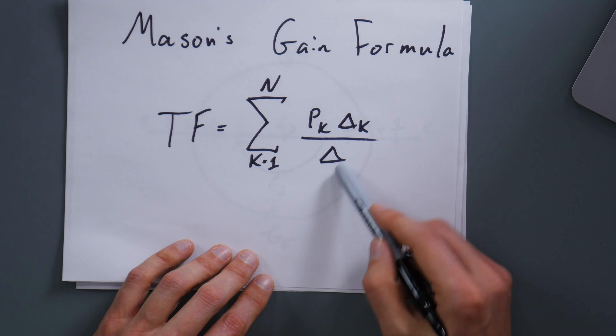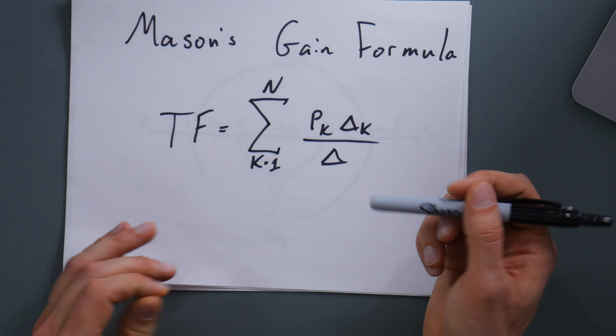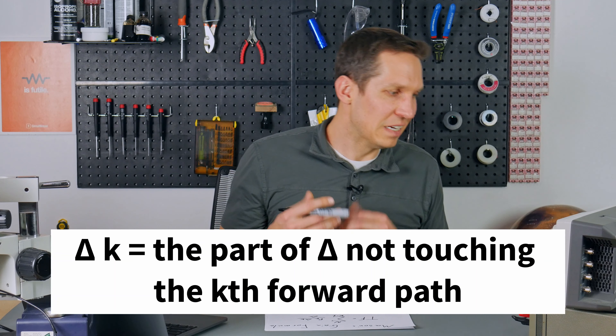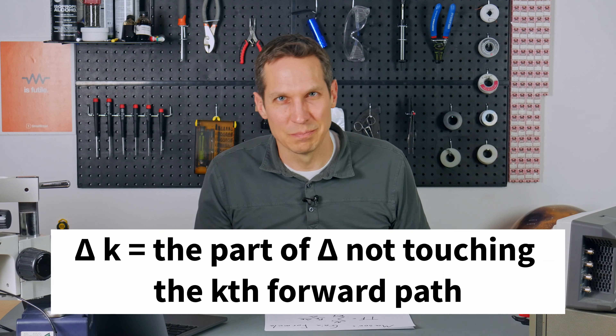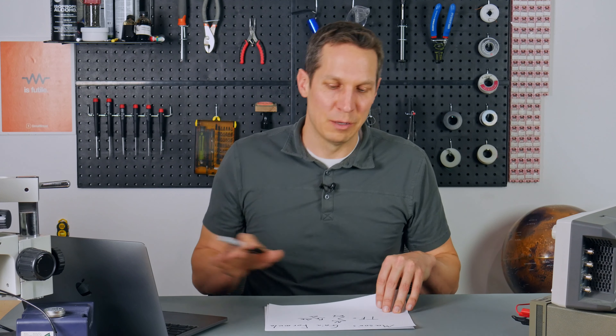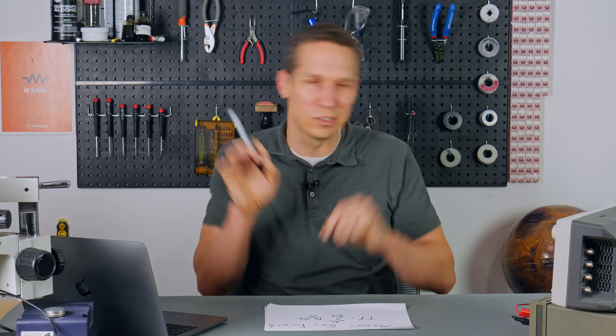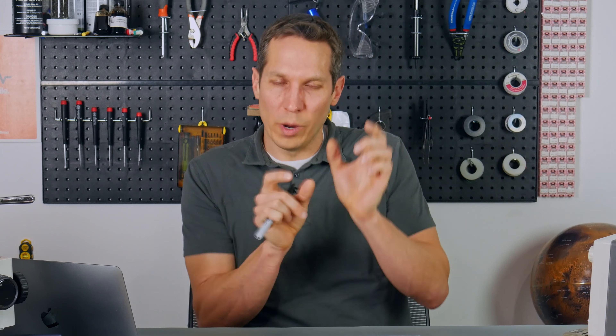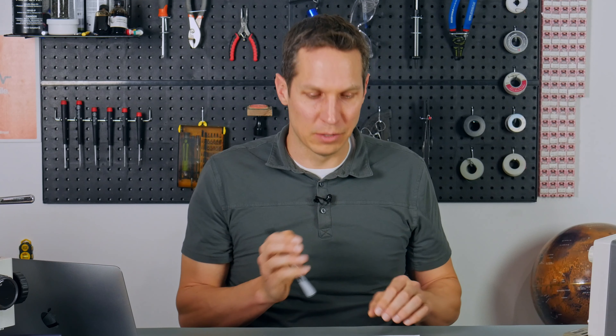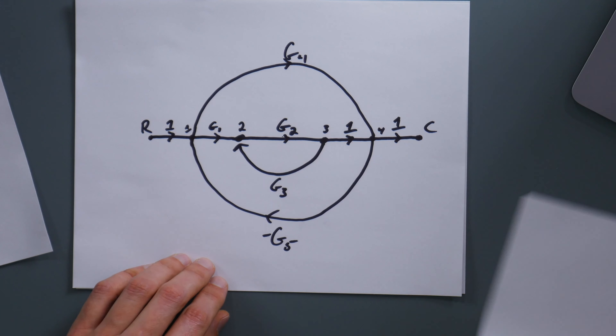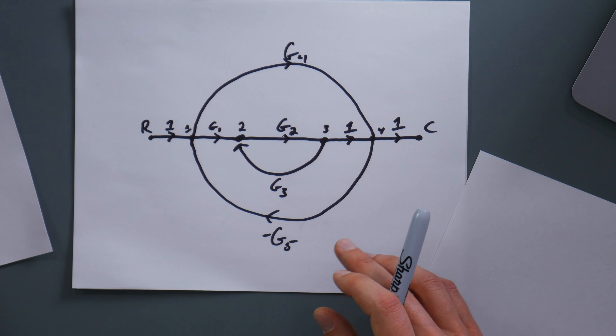We are going to figure out the ideal transfer function using Mason's gain formula. Let's go over the formula in parts. Everything equals our transfer function TF. Over on the right, we have sigma notation — for k equals one, you take this and sum it up to n. N is dependent on the size of the transfer function; the bigger and more complicated, the higher n will be.